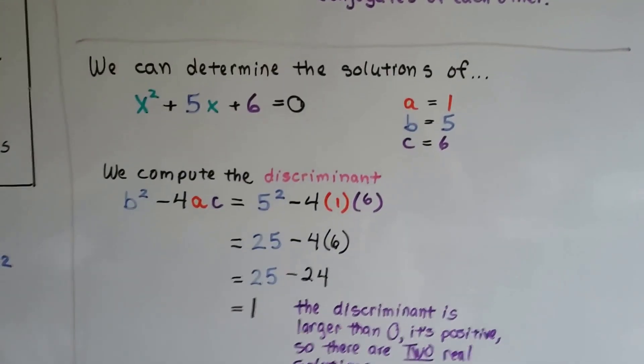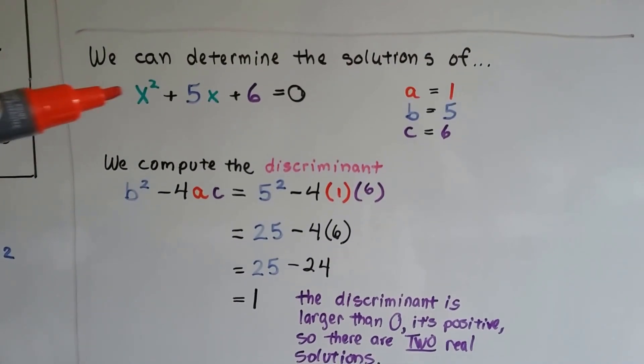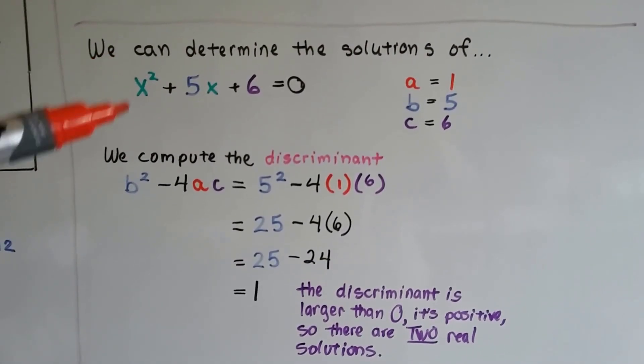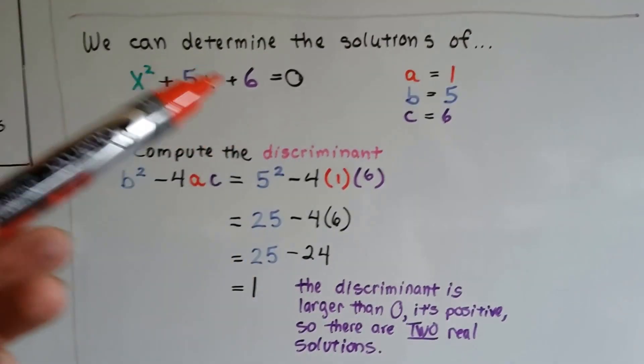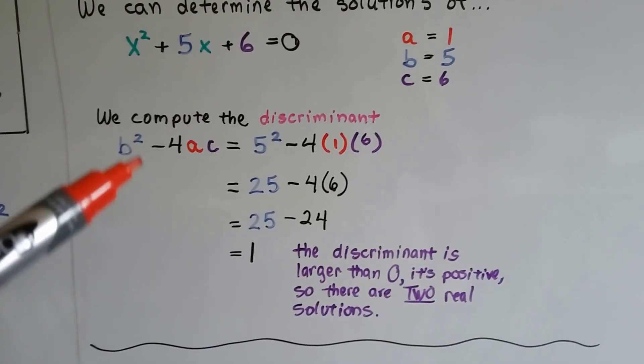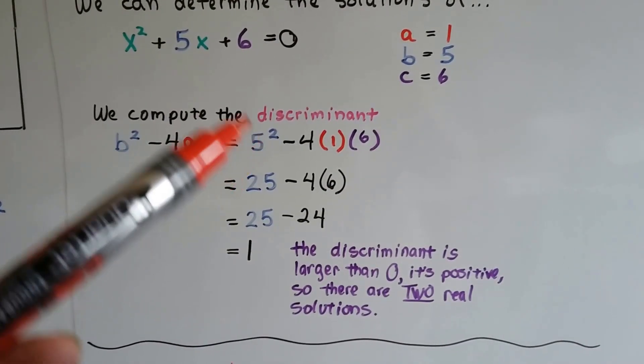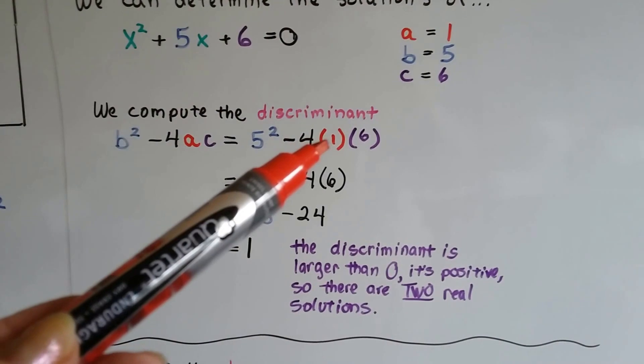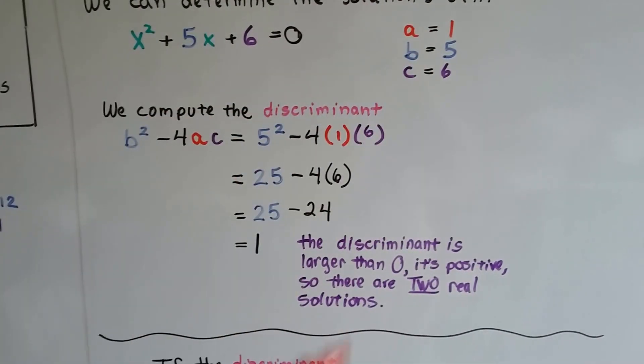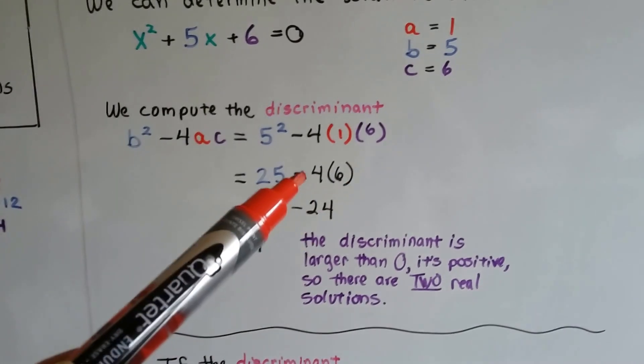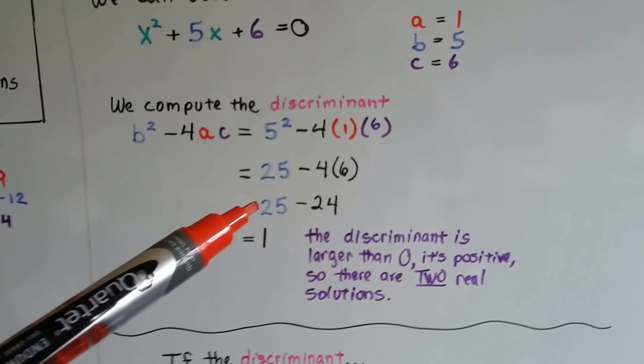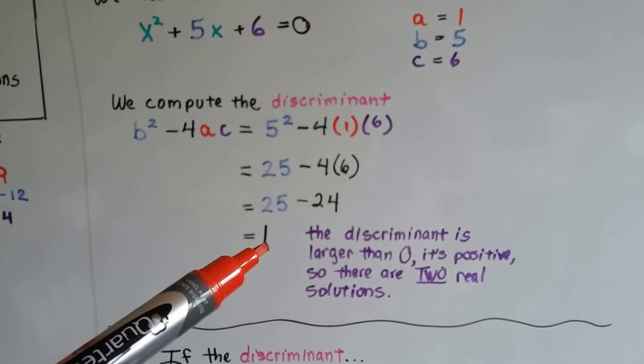Let's try another one. We can determine the solutions of this one. This quadratic equation in standard form. We've got an invisible 1 again for our a. b is a 5 and c is a 6. We compute the discriminant, that b squared minus 4ac. We get 5 squared minus 4 times 1 times 6. And 1 times 6 is 6, so we have negative 4 times 6, which gives us negative 24. So we have 25 minus 24, and it gives us a positive 1.